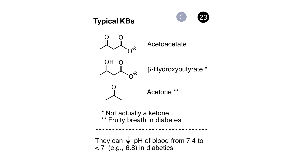Panel C shows the three classical ketone bodies: acetoacetate, beta-hydroxybutyrate, and acetone. From the standpoint of chemical accuracy, beta-hydroxybutyrate is an alcohol and not a ketone, but it's lumped in with the ketone bodies for historical reasons. Acetoacetate and beta-hydroxybutyrate are the useful ketone bodies as precursors to metabolic energy. Acetone, by contrast, is not useful by this criterion, but it is a useful biomarker because its presence can help diagnose diabetes.